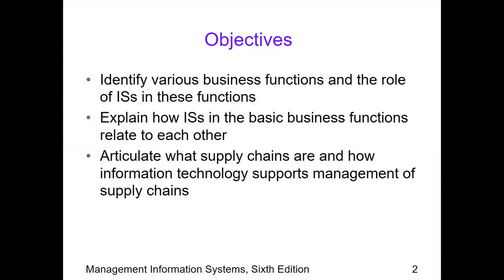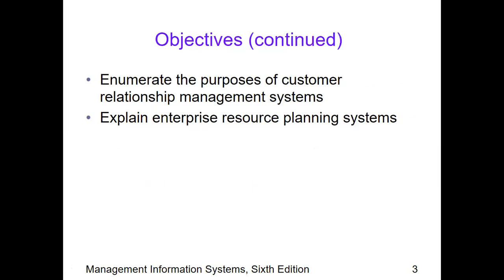Here are our objectives. We identify various business functions and the role of information systems in those functions — normally we talk about functional departments. Then we explain how information systems relate to basic business functions and how they relate with each other. Next is to articulate what supply chains are and how IT supports supply chain management. Then we enumerate the purposes of CRM or customer relationship management systems and also explain ERP or enterprise resource planning systems.